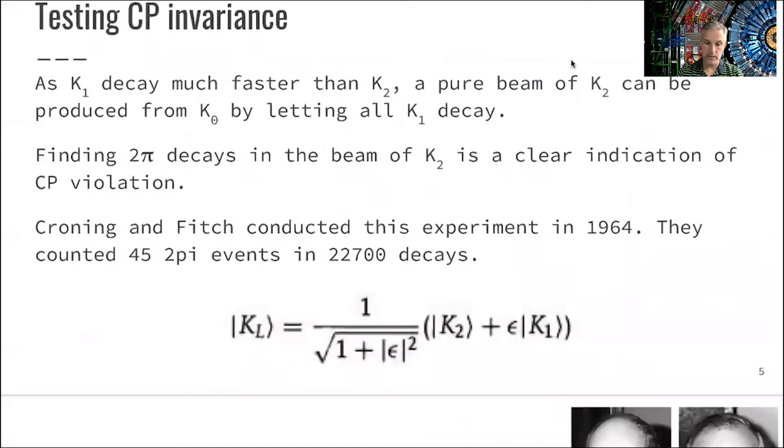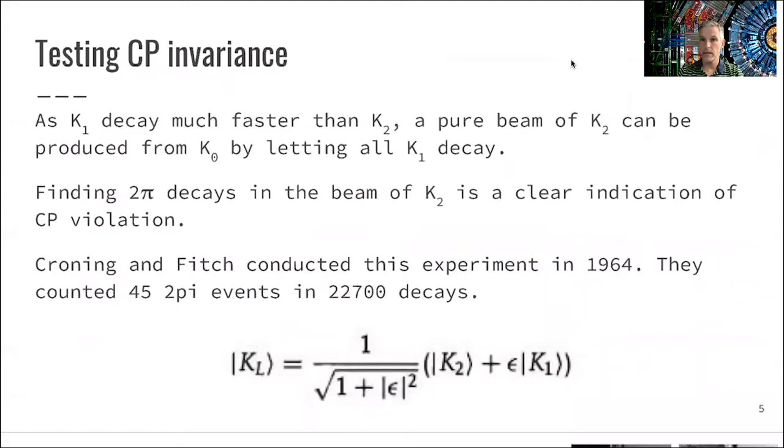Exactly that was done. Cronin and Fitch picked up this idea. They set up an experiment in which they produced K1s, had them decay, and then studied later in the beam whether they could find two pion decays. They did indeed observe 42 or 45 pion decays, two pion decays, in a total of 22,700 decays.